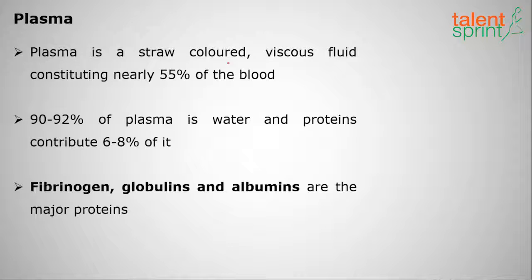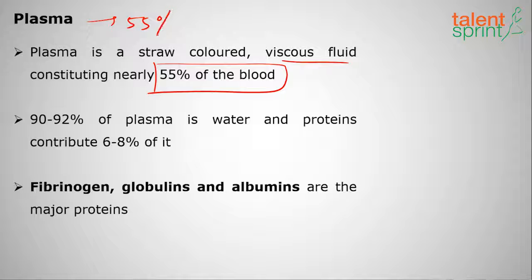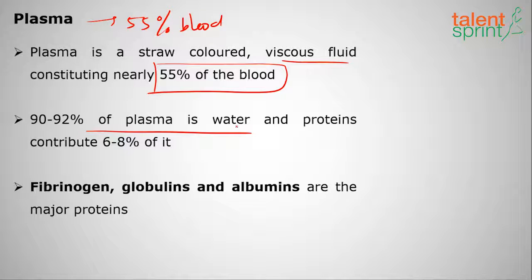There are two types of blood vessels: arteries and veins. Moving on to the first component, plasma — plasma is a straw-colored viscous liquid containing nearly 55% of the blood. 90 to 92% of the plasma is water.